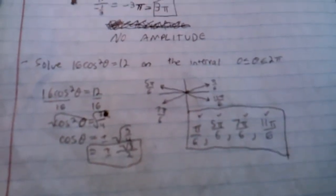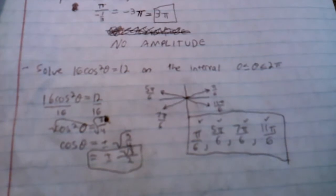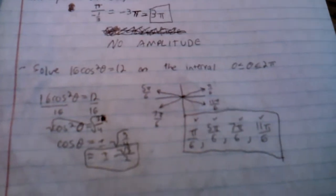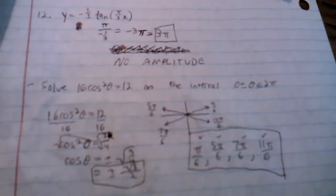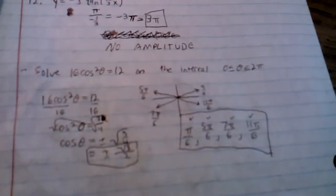We're going to solve 16 cosine squared theta equals 12 on the interval of theta is greater than or equal to 0 but less than or equal to 2 pi, so on the unit circle basically.